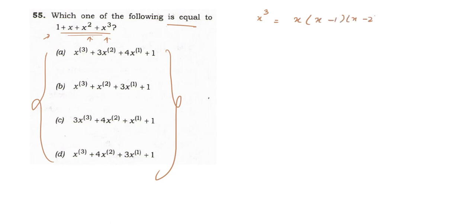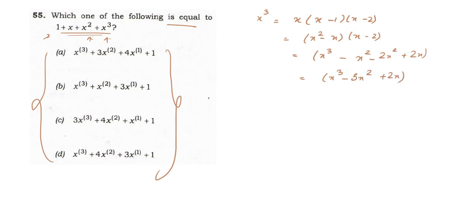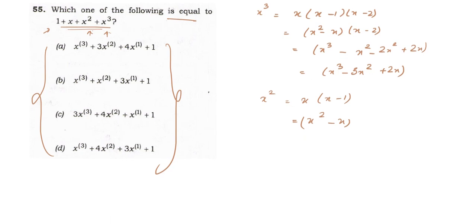Starting with x³ in factorial notation: x(x-1)(x-2) = x³ - 3x² + 2x. For x² in factorial notation: x(x-1) = x² - x. Since we need a single x³ term, options with x³ are A, B, and D, so option C is eliminated automatically.